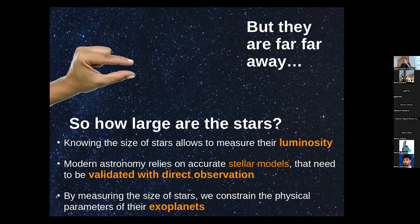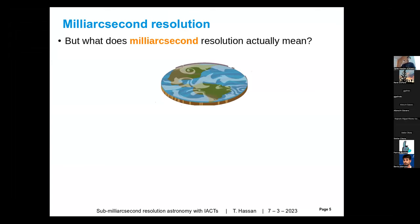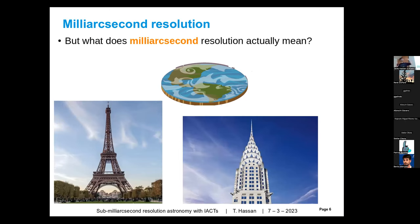Other obvious uses of stellar diameter measurements are reconstructing the physical parameters of exoplanets. When we see a transiting exoplanet and we know the properties of the star very well, we can improve the transiting exoplanet analysis and therefore infer stronger conclusions about the physical parameters of planets. But when we talk about milli-arcsecond resolution, what do we really mean?